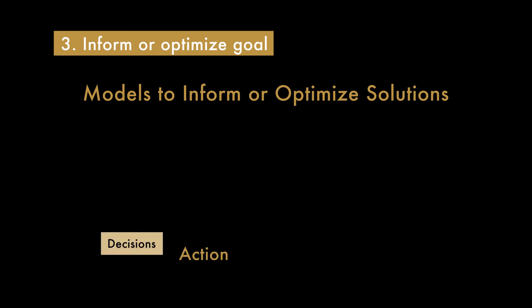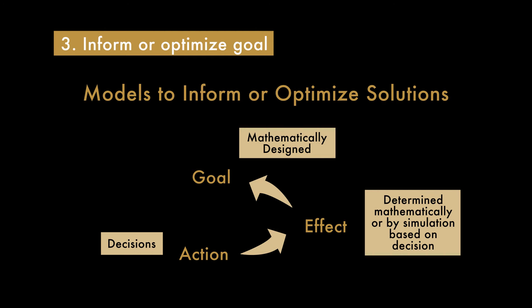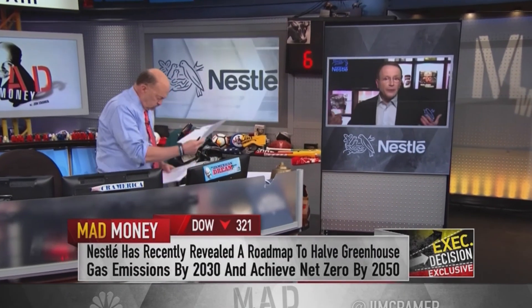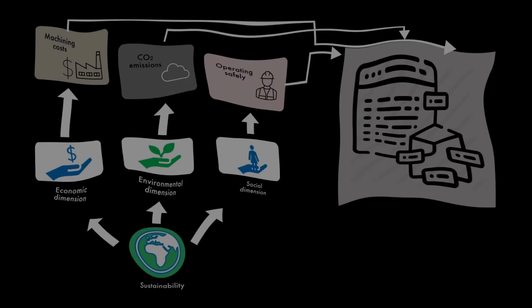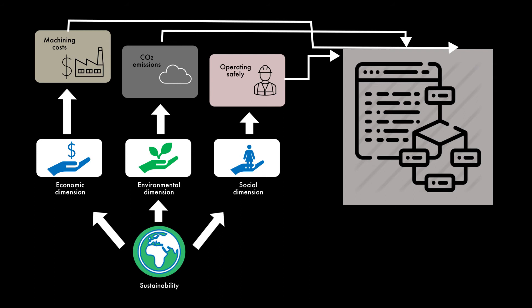Now on to the third goal category of modeling: informing or optimizing decisions. These link an action and its effect to a specific objective, and usually these models combine a mathematical definition of the objective with a mathematical or simulation model that defines the behavior of the system in response to a feasible set of controls. Today, many interesting examples of optimization modeling come from companies trying to respond to increasing social demands for more sustainable products. These companies build goal-based mathematical models that include both social and environmental attributes reflecting customers' social and green expectations — the idea being to find the best trade-off between maximizing the sustainable value of the product and minimizing the cost for the companies.